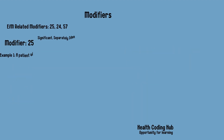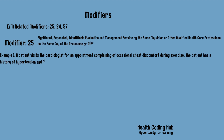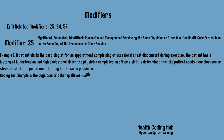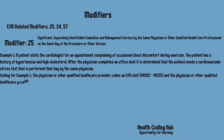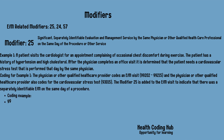In medical coding we have a wide range of modifiers divided into different categories: E&M-related modifiers, radiological-related modifiers, and lab testing-related modifiers. Today I'm going to explain the E&M-related modifiers. In medical coding, there are three major modifiers frequently used with E&M codes: modifier 25, modifier 24, and modifier 57.